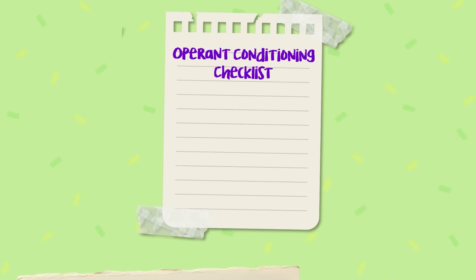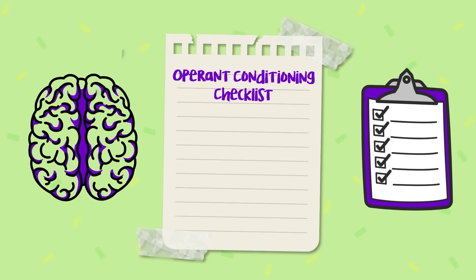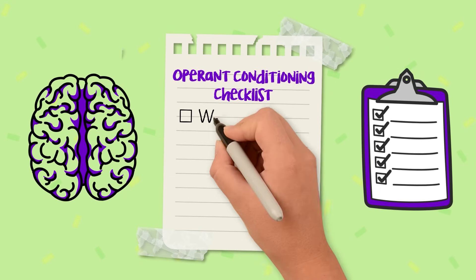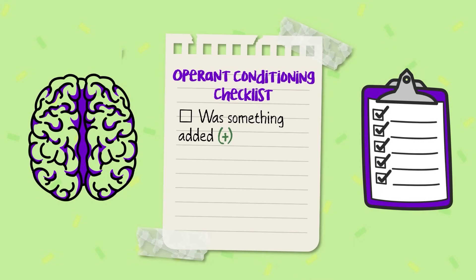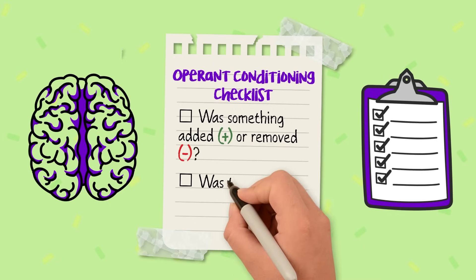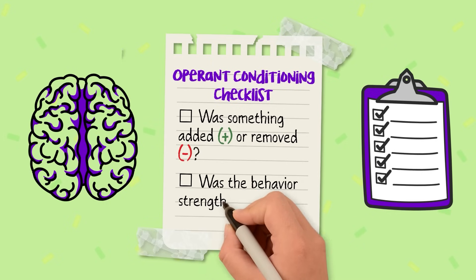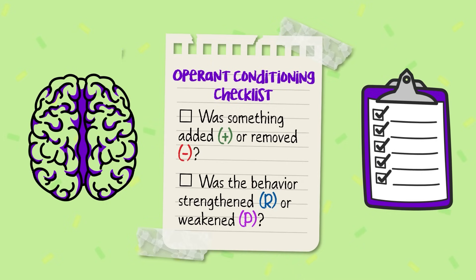Here's your mental checklist. First, ask: in the consequence, was something added — positive — or removed — negative? Then ask: was the behavior strengthened — reinforcement — or weakened — punishment?